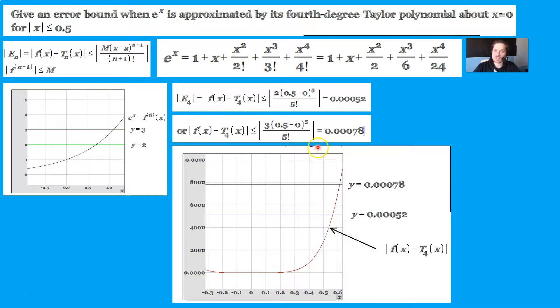Look at this last graph and let's analyze it very carefully. The red curve that you see right there represents the absolute value of f of x minus t sub 4 of x. In other words, what I did is I took this right here, 1 plus x plus x squared over 2 factorial plus x cubed over 3 factorial plus x to the 4th over 4 factorial, and I subtracted it from e to the x, an absolute value, I graphed that quantity. That's that red curve that you see right here.